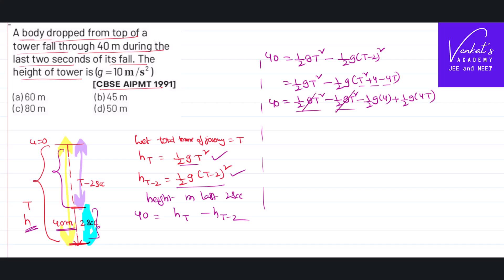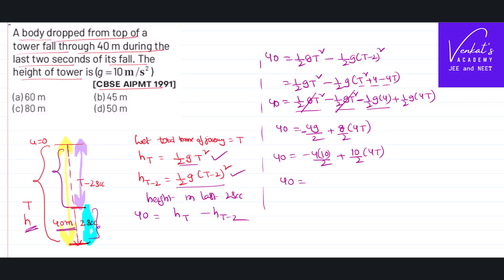Half G T squared and half G T squared cancel out. So 40 equals 4G by 2, with a minus sign: minus 4G by 2, plus G by 2 into 4T. With G equal to 10: 40 equals minus 20 plus 5 into 4T, which gives 40 equals minus 20 plus 20T. So 60 equals 20T, therefore T equals 3 seconds.